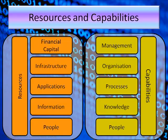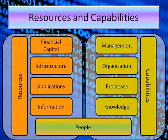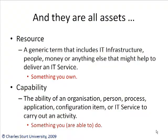You find people both in resources and capabilities. People with the right abilities become capable to do the work. In the end, they're all assets — resources are assets and capabilities are also assets, and you need them both to deliver your services to your customers. A resource is a generic term that includes IT infrastructure, people, money or anything else that might help to deliver an IT service — it's typically something you own. Capabilities are more about ability — the ability of an organization, person, process, application, configuration item or IT service to carry out an activity. The word 'ability' is actually in the word 'capability.'